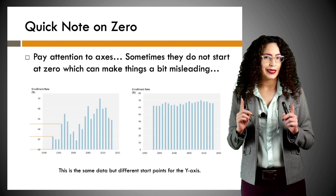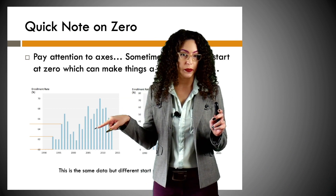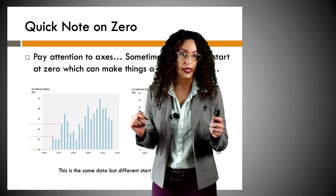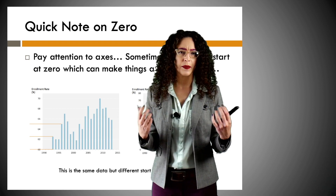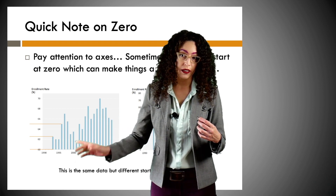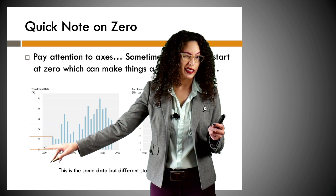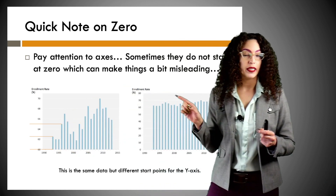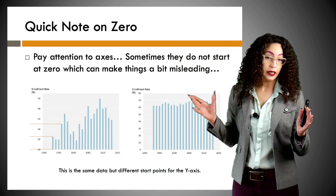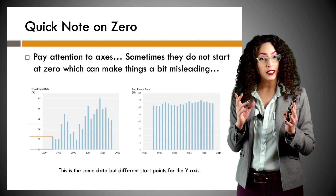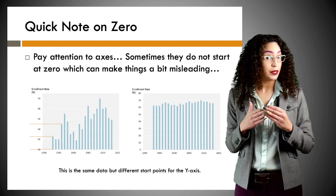Now let's have a quick moment to discuss zero on graphs. This graph was presented in some news media outlet saying our youth aren't enrolling in college as much as they used to. But look closely — we have time and enrollment rates, and look where it starts. That's sketchy. Now let's zoom out to actually start at zero, and does that look terribly alarming? Nope. This is an example of how people will shift and manipulate data to push their own agenda or get their particular message across.